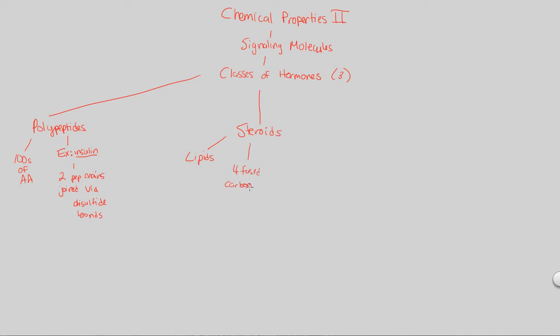They are four fused carbon rings - usually three hexagons and a pentagon fused together, all carbon rings. They're very much a lipid because they have tons of hydrocarbons on them, and they are all derived from cholesterol.